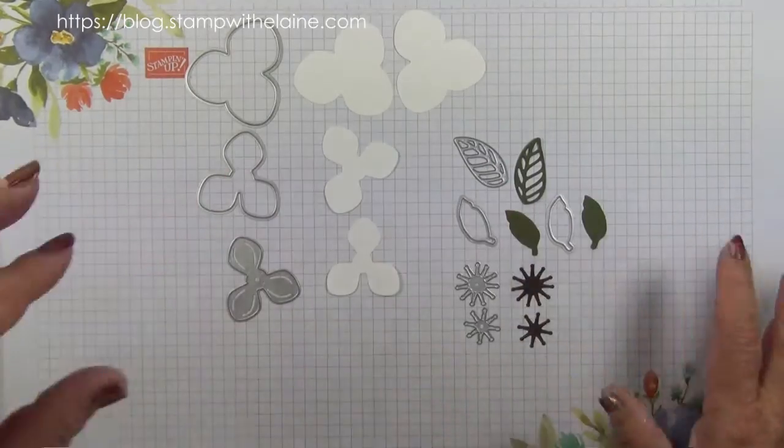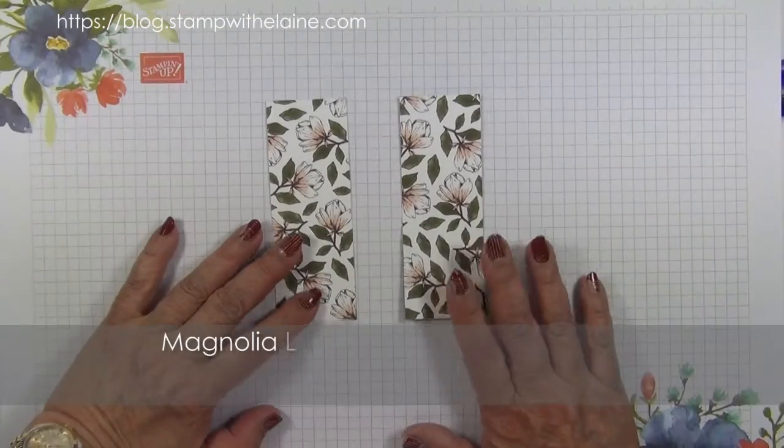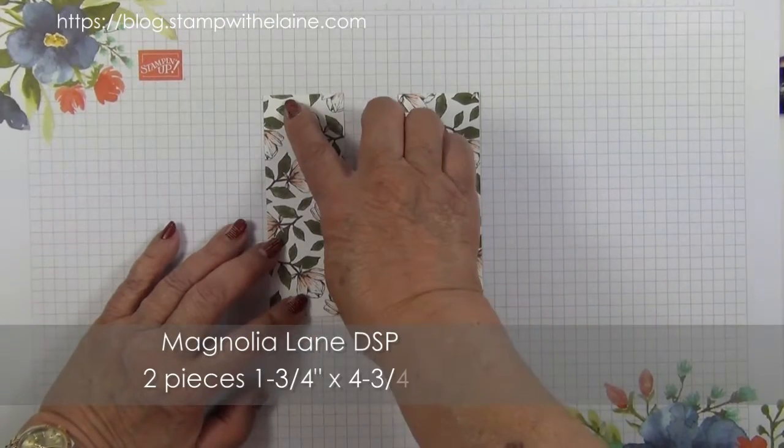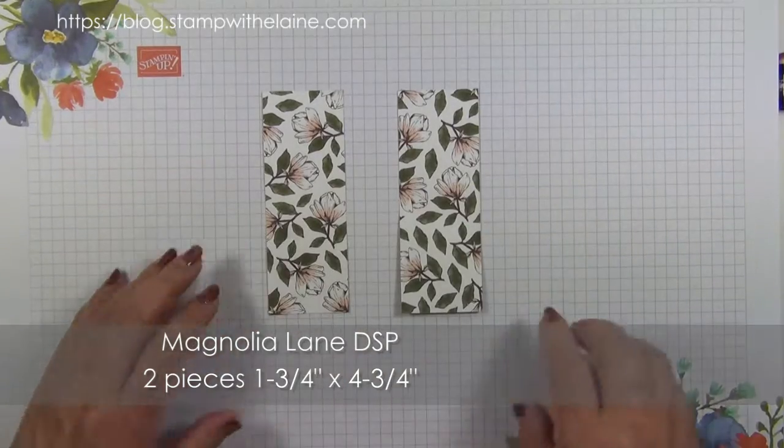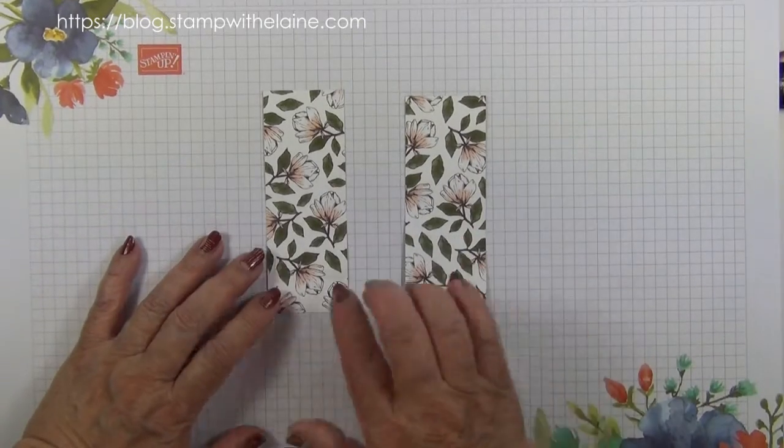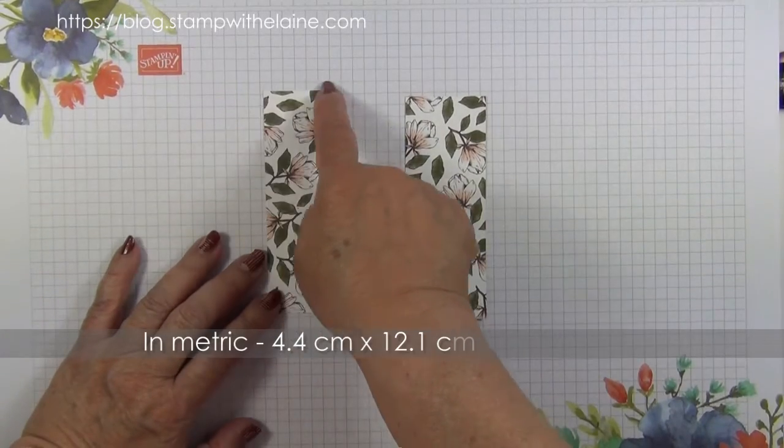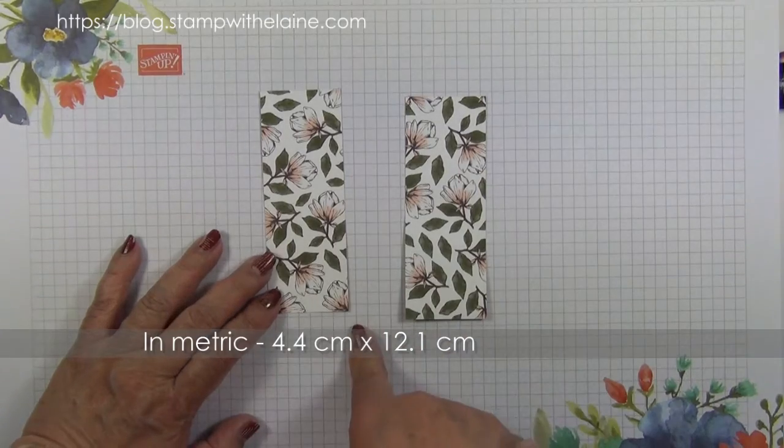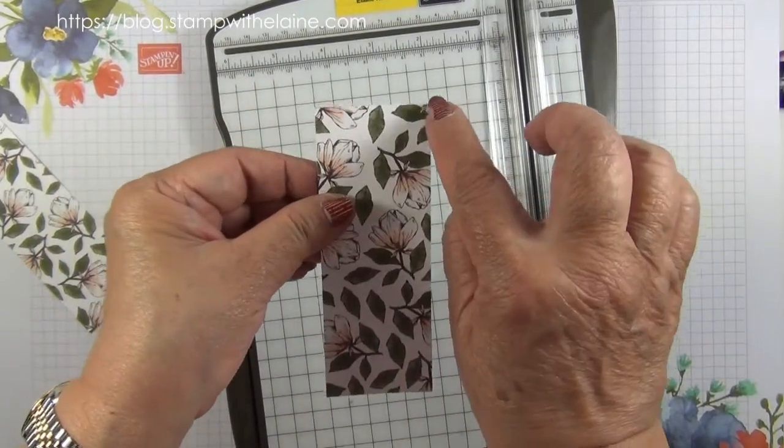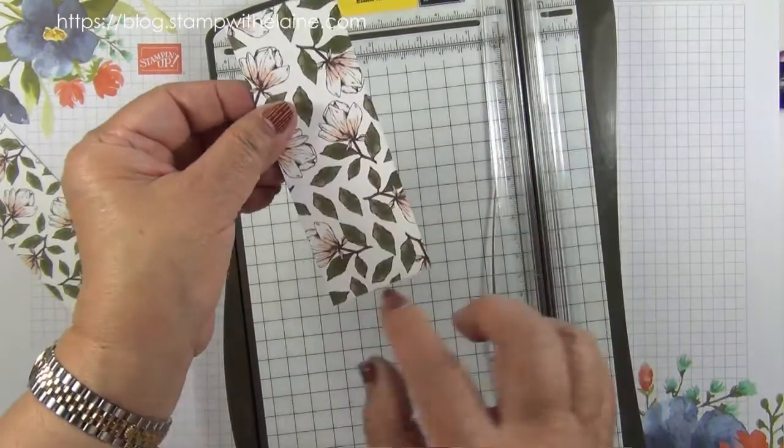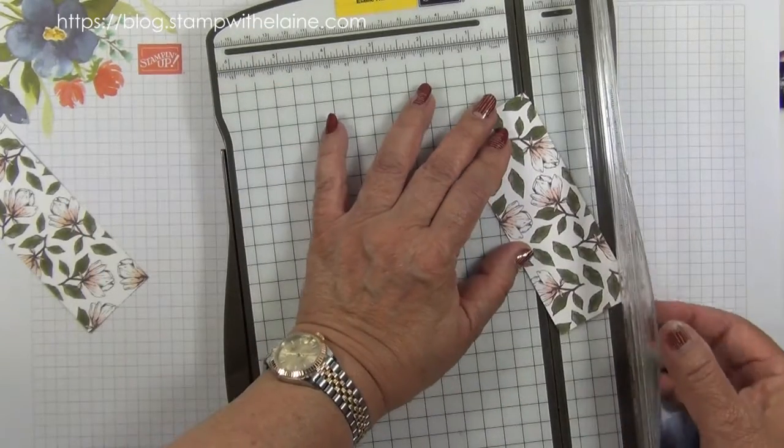I've pre-die cut those to save time. Two pieces of DSP cut at 1 and three quarter inches by 4 and three quarter inches. In metric that will measure 4.4 cm by 12.1 cm. Now you'll need to cut these diagonally from the top right down to the bottom left corner.